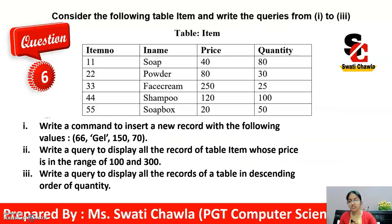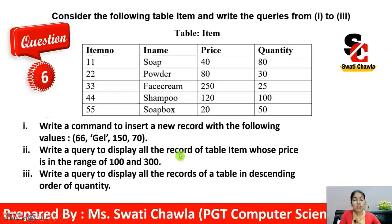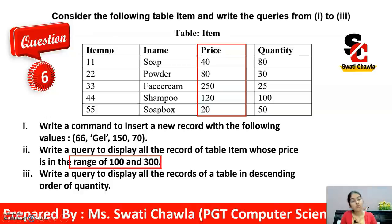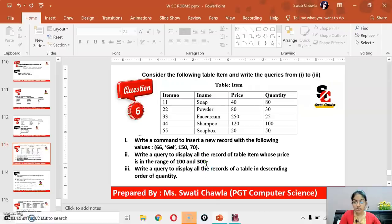Now let's move on to our second part: write a query to display all the records of table 'item' whose price is in the range of 100 and 300. The SELECT command will be used here. The condition is that the price should be between 100 and 300 — meaning 100 and 300 are included as well.